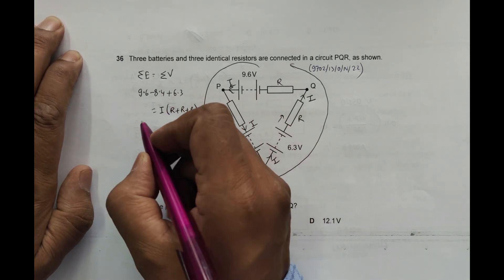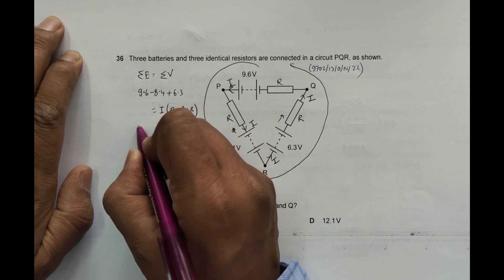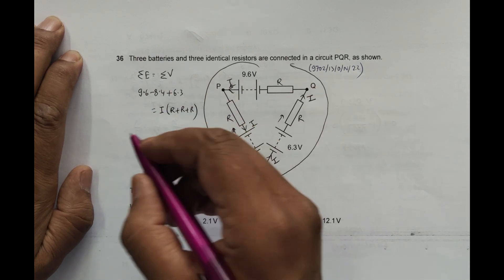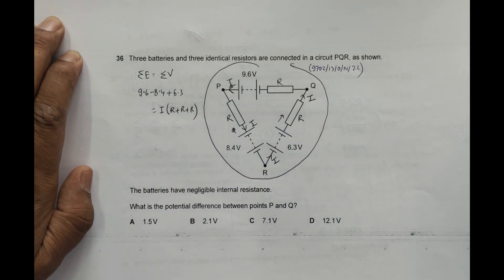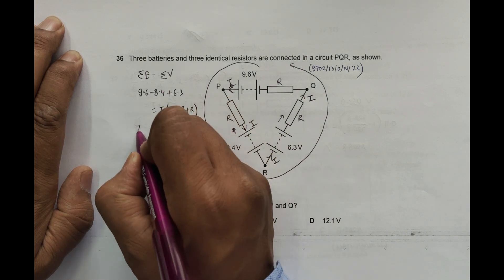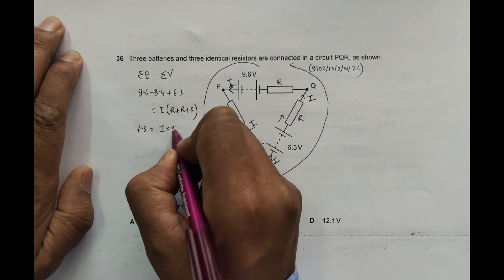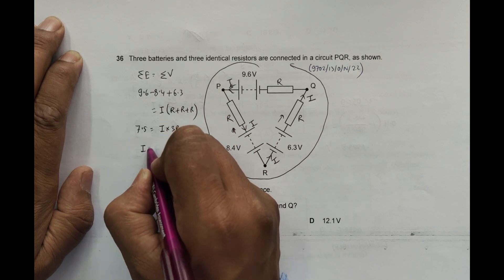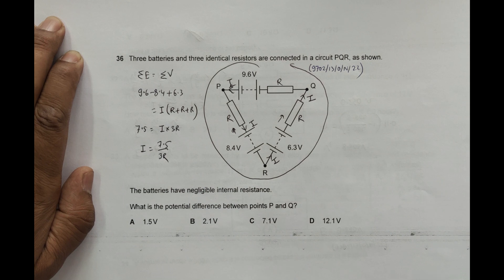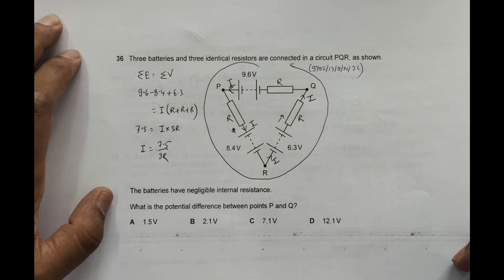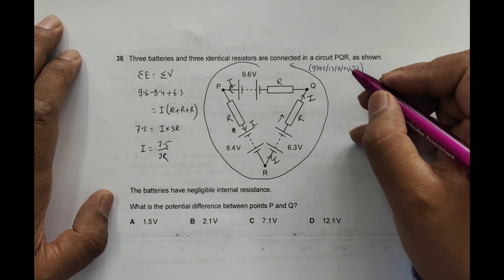So from here, 9.6 minus 8.4 plus 6.3 equals 7.5. So 7.5 equals I into 3R, therefore I equals 7.5 by 3R. So this is the value of the current here.